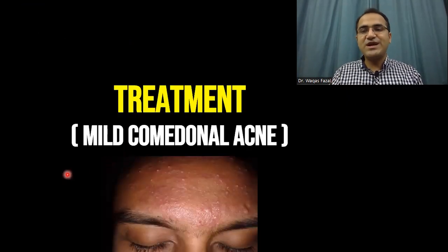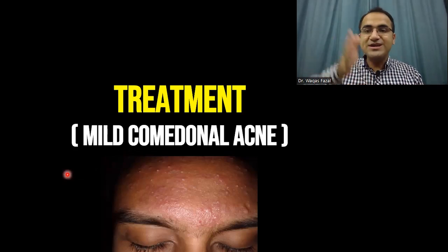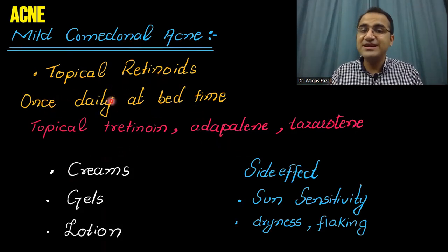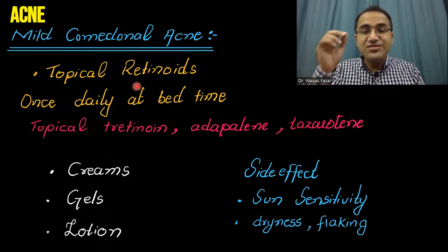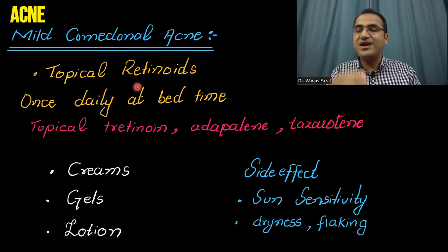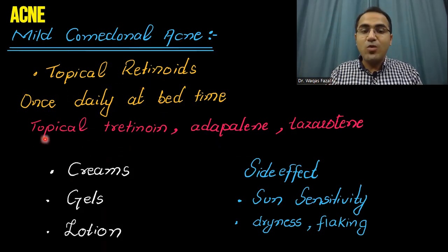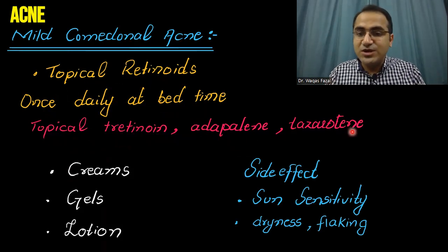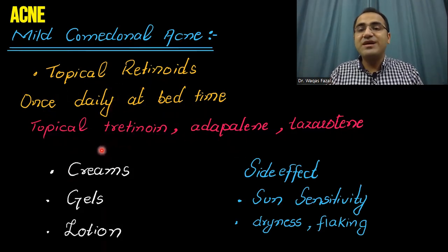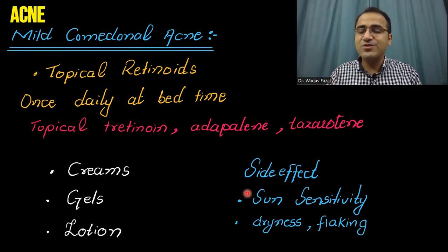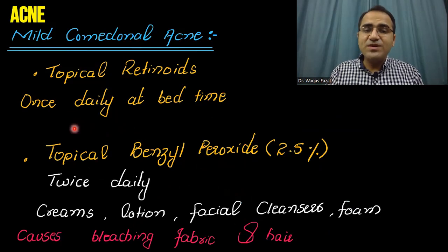Now coming to the treatment of acne, divided into mild, moderate, and severe. Mild comedonal acne can be treated with topical retinoids once daily at bedtime — retinoids cause sun sensitivity, therefore they are applied at night. Topical tretinoin, adapalene, and tazarotene are the topical retinoids that come in the form of creams, gels, and lotions. Side effects include sun sensitivity and dryness and flaking of skin.